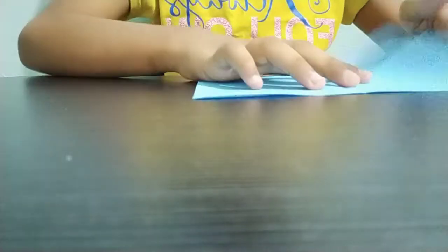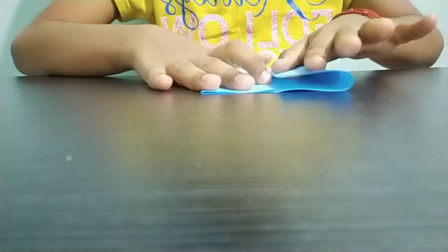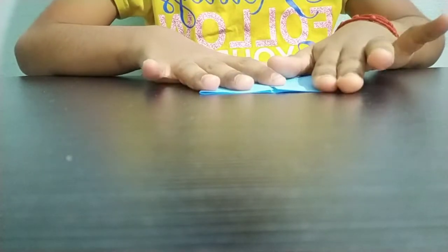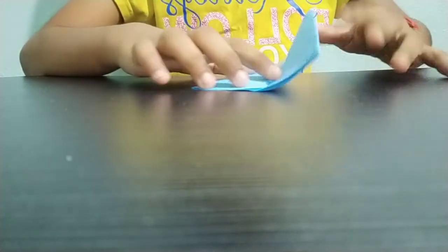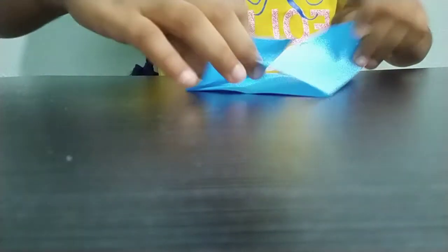And fold both the sides to the middle line. Step number three is that we should take one piece of paper from here and fold it backwards.